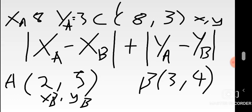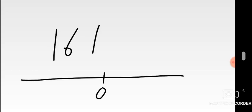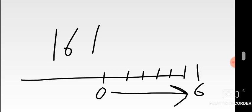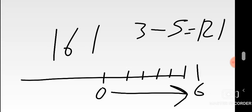Then you compute: |x_a − x_b| + |y_a − y_b|. So x_a minus x_b is 8 minus 2 — the absolute of 6 is just 6. For the y part, y_a minus y_b is 3 minus 5, which gives negative 2. Absolute value simply means the distance the number is away from zero, so you count along the number line — that distance is always positive.